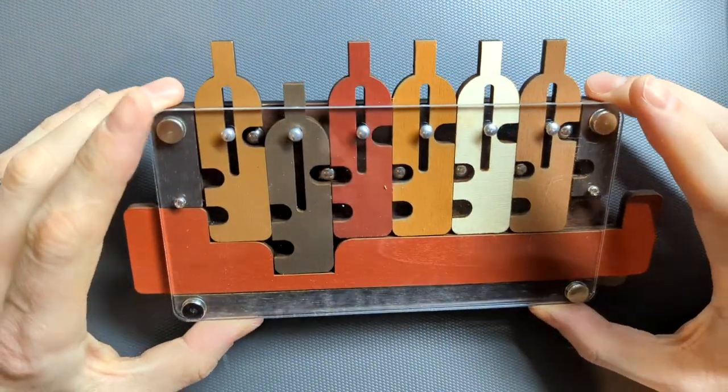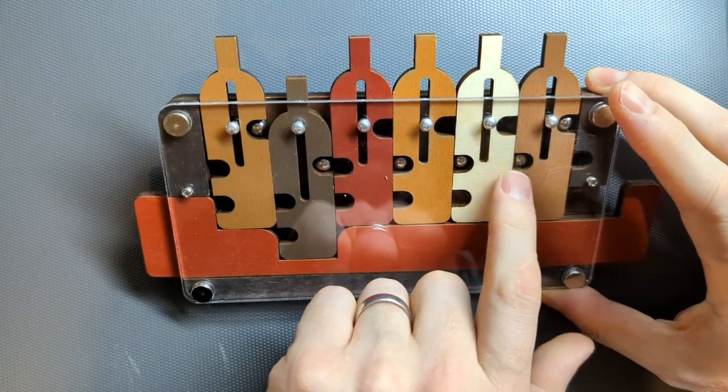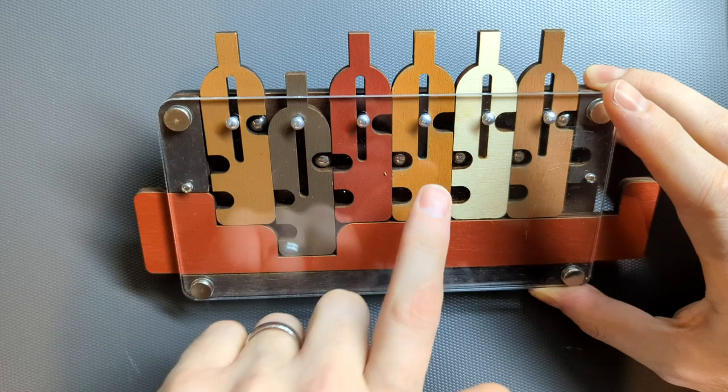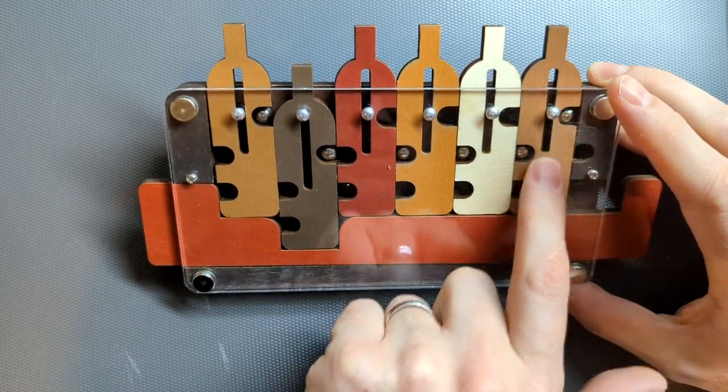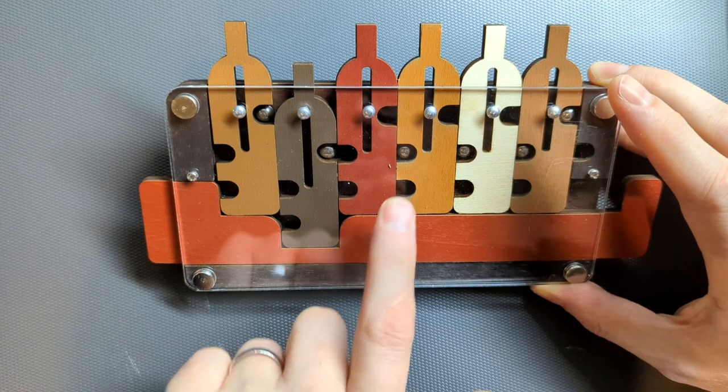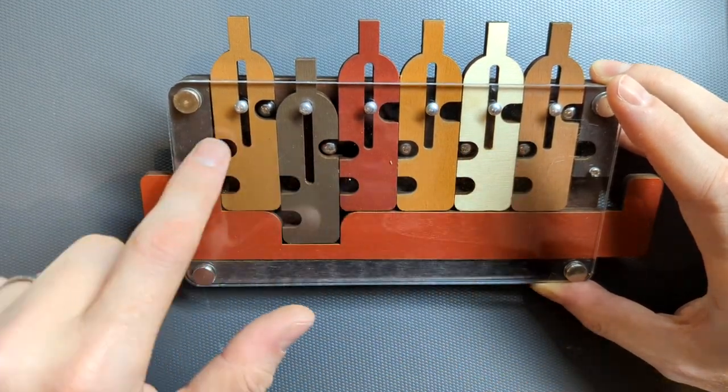So let's have a look at what we've got. We've got one, two, three, four, five, six bottles, and there are ball bearings. Some of the bottles have one ball bearing. One of them has two ball bearings, and one of them has no ball bearings. And they each have three slots arranged the same.